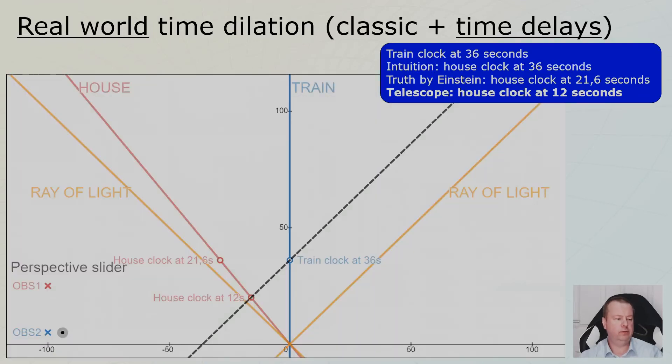I can do this the other way around as well. So now we are in the perspective of the train. And you see when the house's clock is at 12 seconds, light starts to travel towards the telescope on the train. And it reaches the train telescope at 36. Travel line, again, 45 degrees, because that's the speed of light.